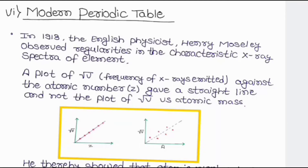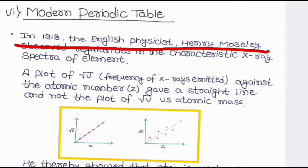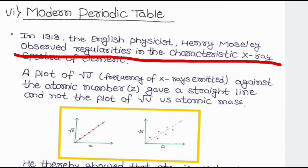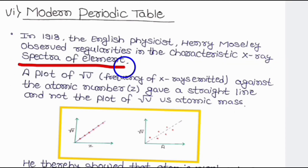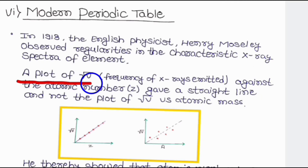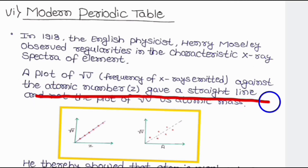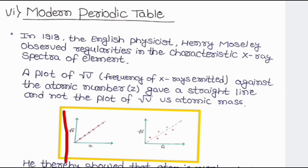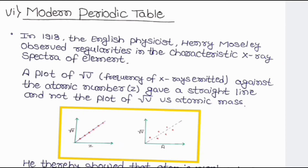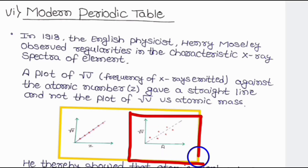Let us come to the modern periodic table. In 1913, English physicist Henry Moseley observed regularities in the characteristic x-ray spectra of elements. He plotted a graph of √v versus atomic number, which gave a straight line. As you can see, the √v versus atomic number graph gives a straight line slope, whereas in the case of √v versus mass number, he got an irregular graph.